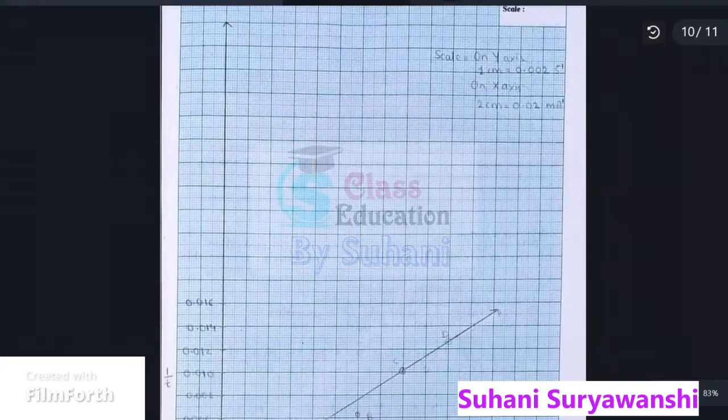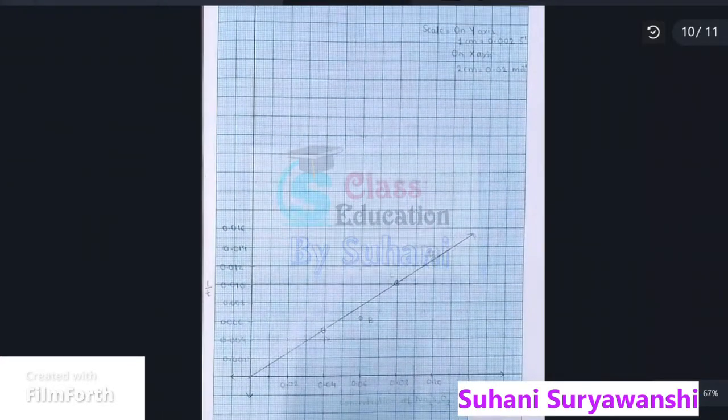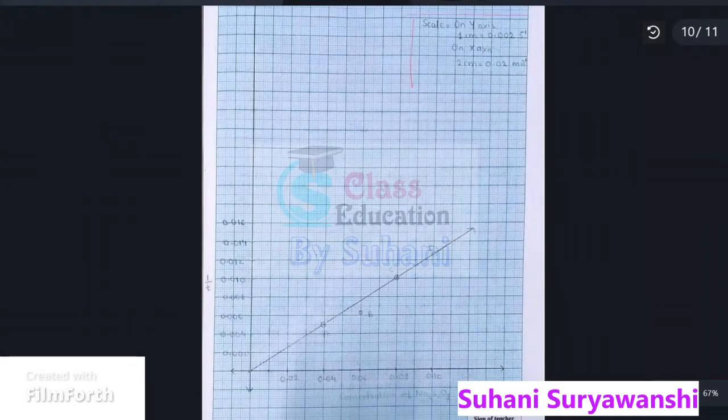This is the graph which you have to plot according to the values. Here I have written the scale: on y-axis, 1 cm equals 0.002 per second inverse, and on x-axis, 2 cm equals 0.02.